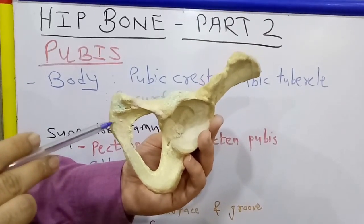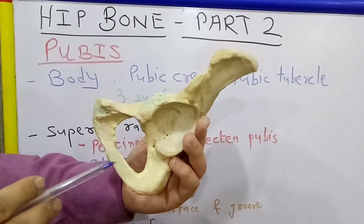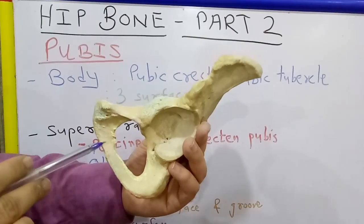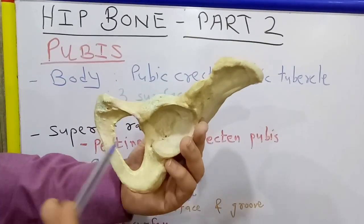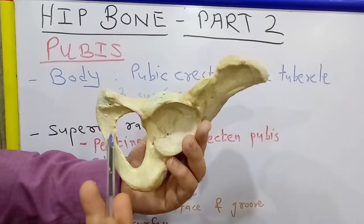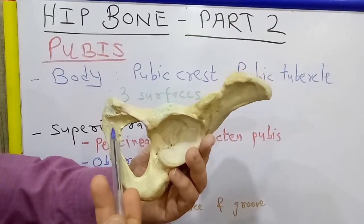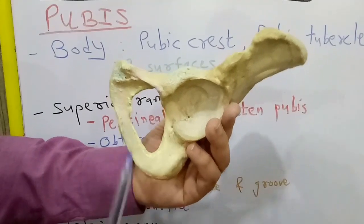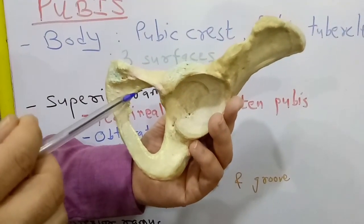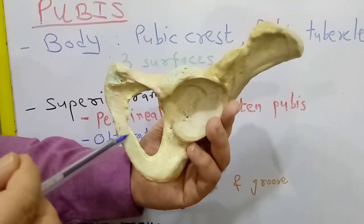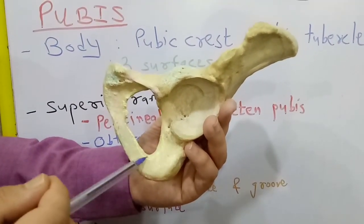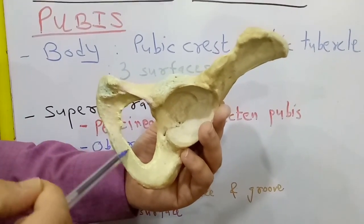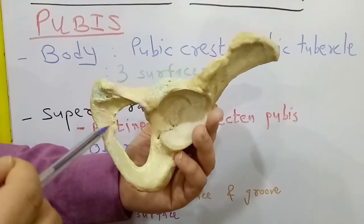Near the margin of the pubic symphysis and the inferior ramus gives origin to the gracilis muscle. Lateral to gracilis, there is the origin of adductor brevis muscle. And near the margin of the obturator foramen — all around the margin — this is the origin of obturator externus muscle.